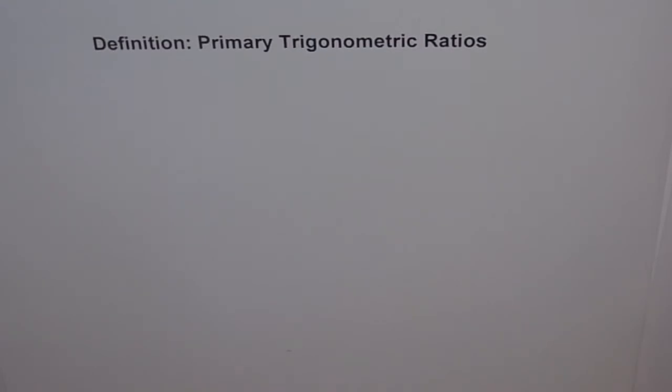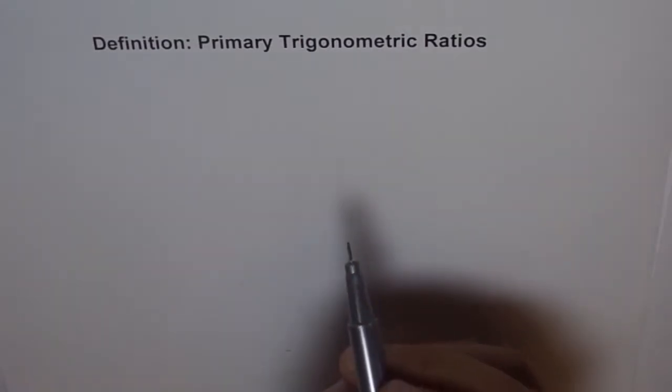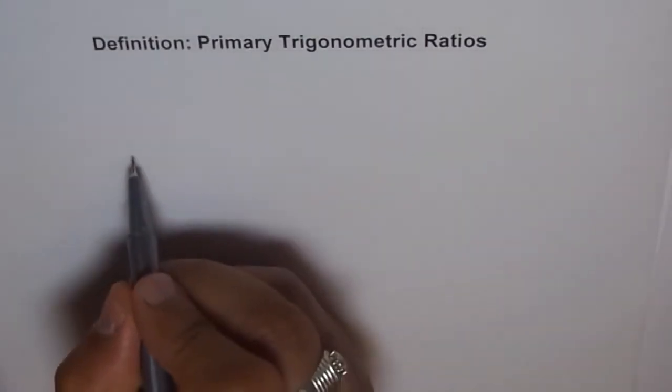Hello, let's try to understand our primary trigonometric ratios. I like to start right from the very beginning — what are these ratios and how did they come into existence? It's a very basic question. Let's try to understand what's going on here.